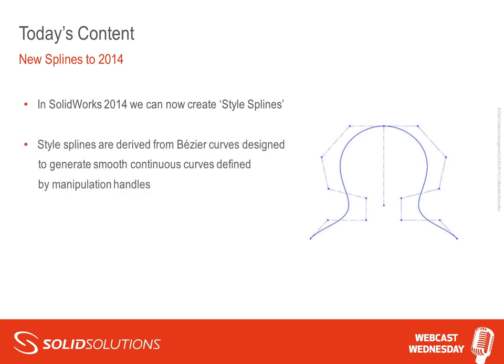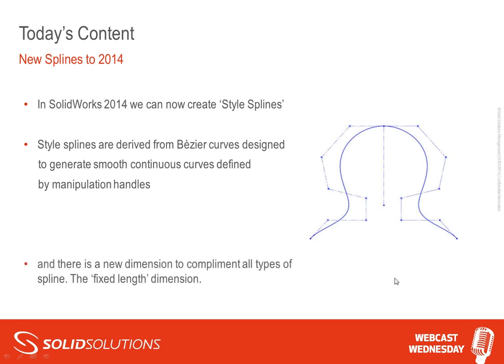The style spline is derived from the Bezier curve, designed to generate a smooth continuous curve defined by its manipulation handles. Those control points and centerline sketches you see around the spline in the image - with the style spline, that's actually what you draw. Instead of drawing the spline and placing points along it, you draw these handles around the spline for it to then generate the spline. We've also got a new dimension to complement all types of spline, which really brings the tool alive.